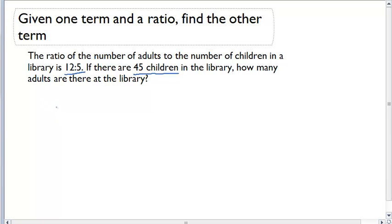If I set this ratio up, it starts off as 12 to 5, which is adults to children. Now, what I also have in my new ratio is 45 children, but I don't know how many adults it is.